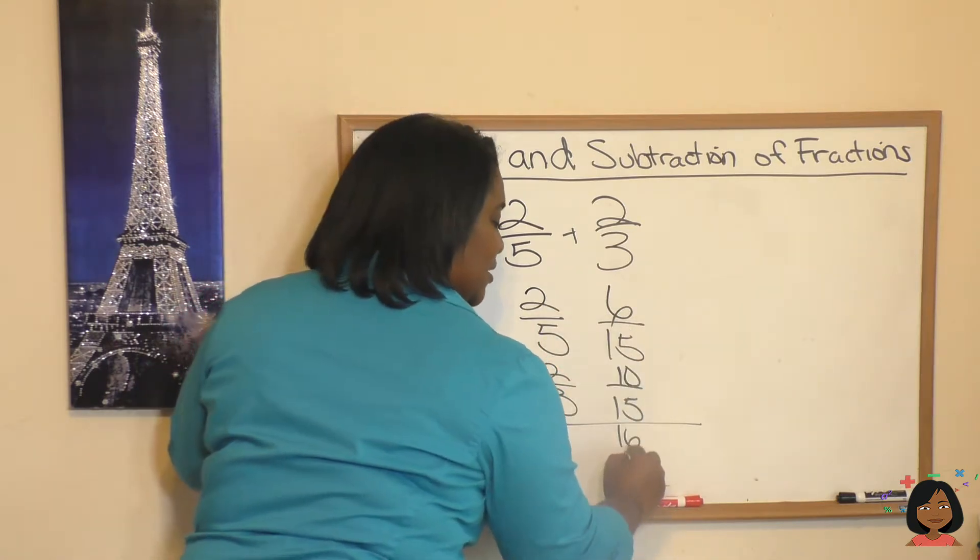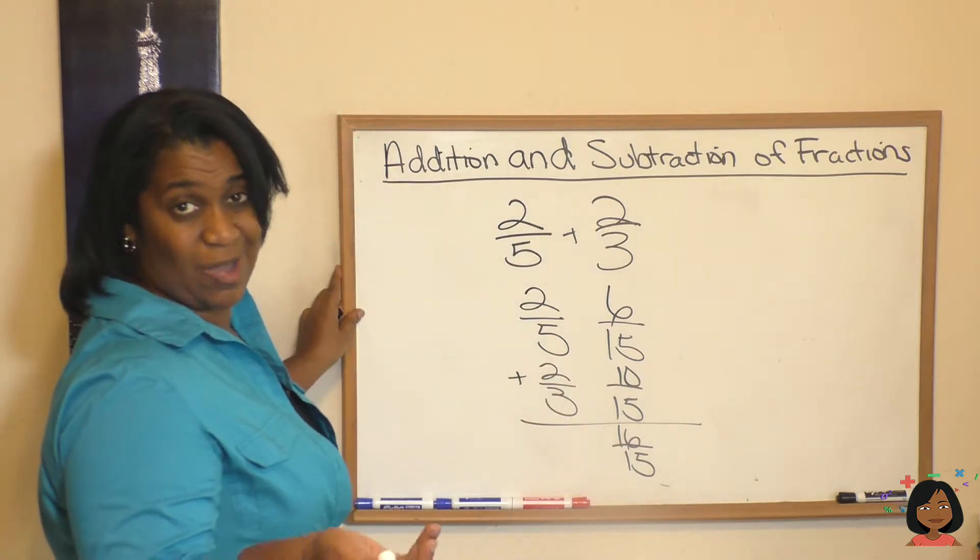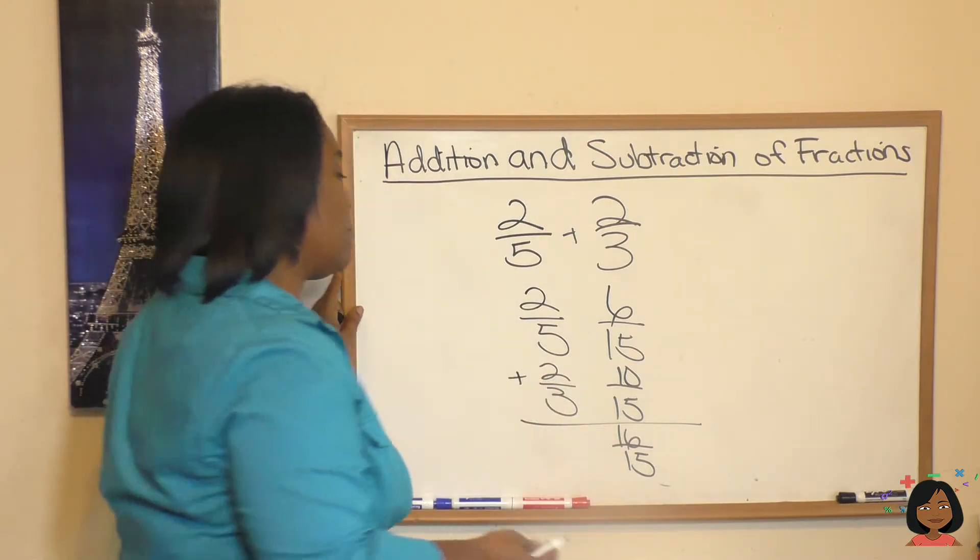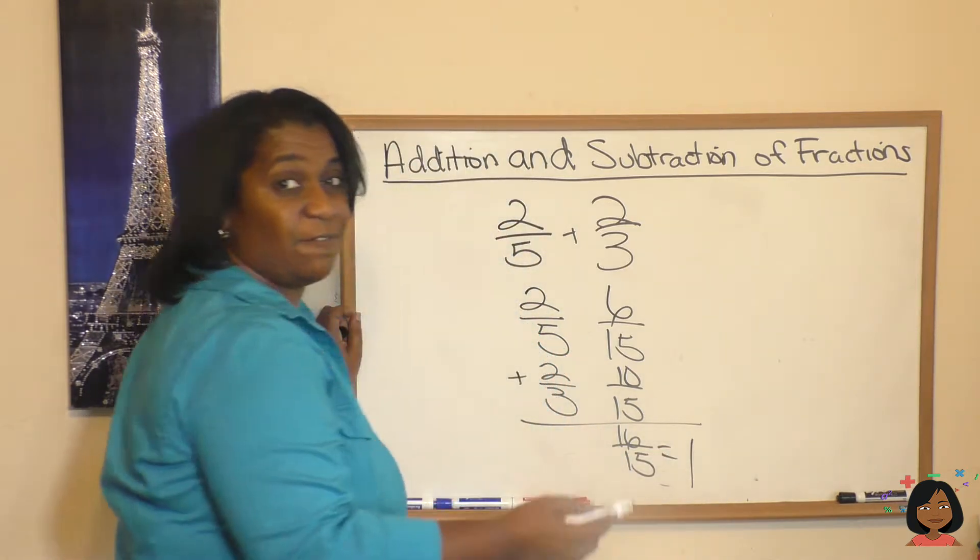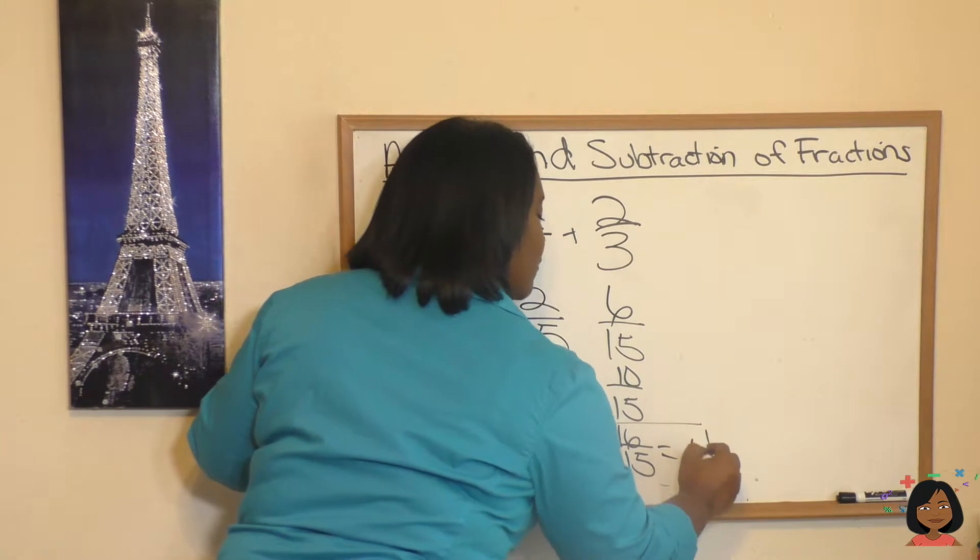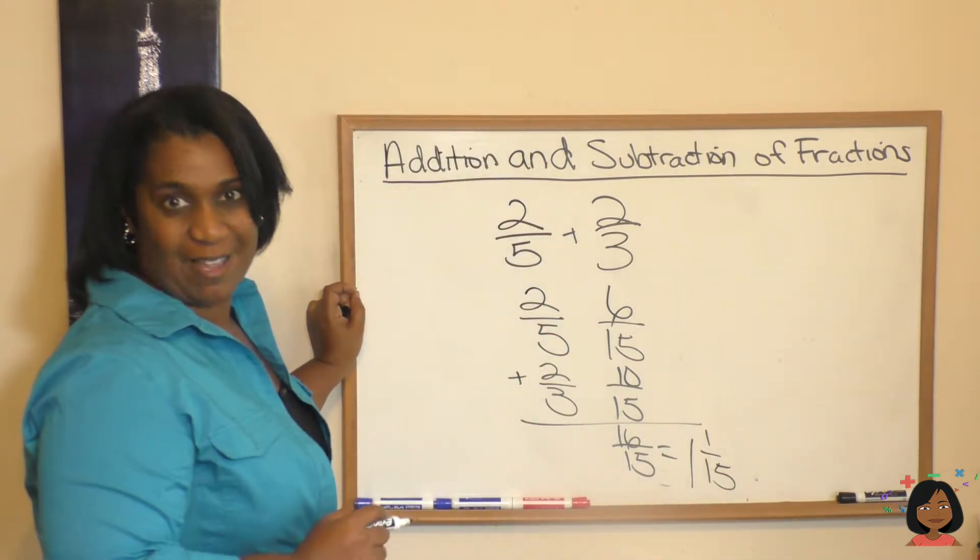Now we can add. We get 16 over 15. And that is an improper fraction. So are we going to keep it that way? Let's turn it into a mixed number. 1. And how much is left over between 16 and 15? 1 is left over. Over 15. So 1 and 1 fifteenth would be your answer.